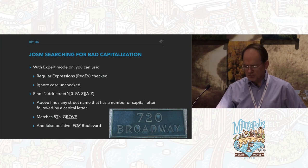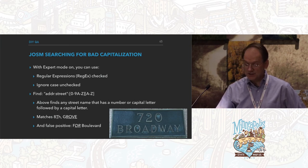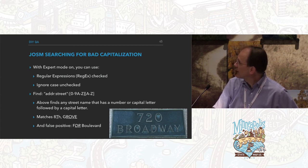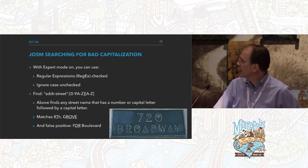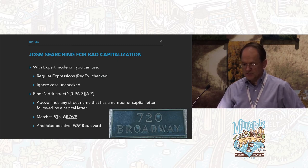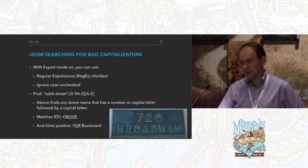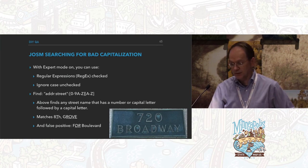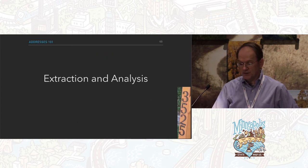In JOSM, with expert mode on, regular expressions checked, and ignore case unchecked, you can use regular expressions. This is my regular expression for finding street names that are all caps. I also noticed I was getting a lot of 8th Street where the T was capitalized, and that should be lowercase. This is a good way to find and fix a lot of things — JOSM is a very powerful editor, so it allows me to quickly get a whole bunch of these and fix them.